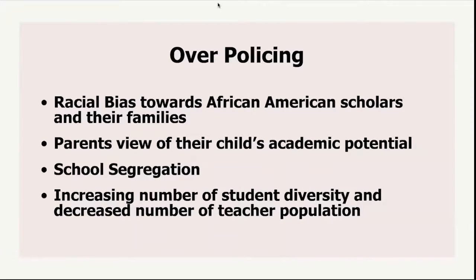Due to racial bias and unfair treatment of Black scholars, parents of color are more likely to receive a phone call about their child's challenging behavior or possible expulsion. The excessive policing of Black children can impact parents' view of their child's academic potential. Despite the student body becoming more ethnically diverse, it is also becoming more segregated — driven by zip code, financial resources, and ethnic identity. According to the U.S. Government Accountability Office, more than a third of students — about 18.5 million — attended a predominantly same-race school during the 2021 school year, and 14% attended schools where almost all students were of a single race or ethnicity.